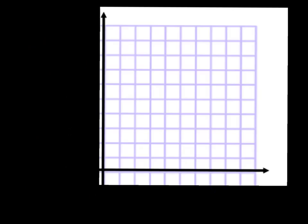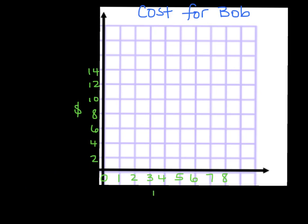Now we'll graph Bob's rides and see what we notice. I've made a graph showing number of rides and cost. Zero rides costs $2, one ride costs $5, two rides costs $8, three rides costs $11, and four rides costs $14. You can see it's forming a straight line, so I'll connect and extend it. I'll label my x and y axes and write the equation: y = 3x + 2.